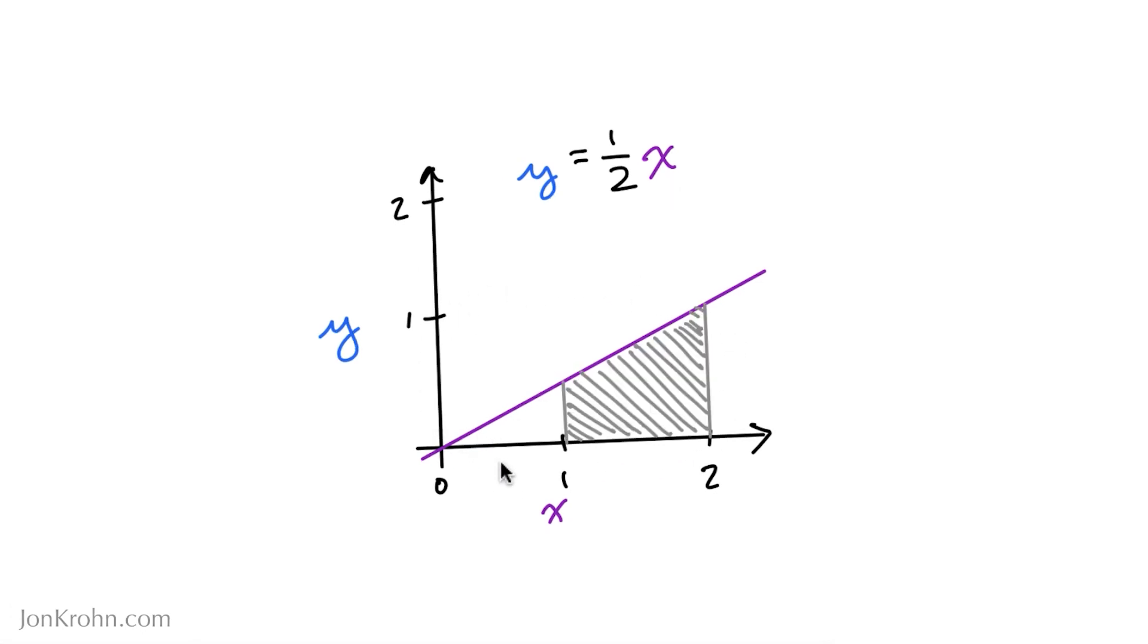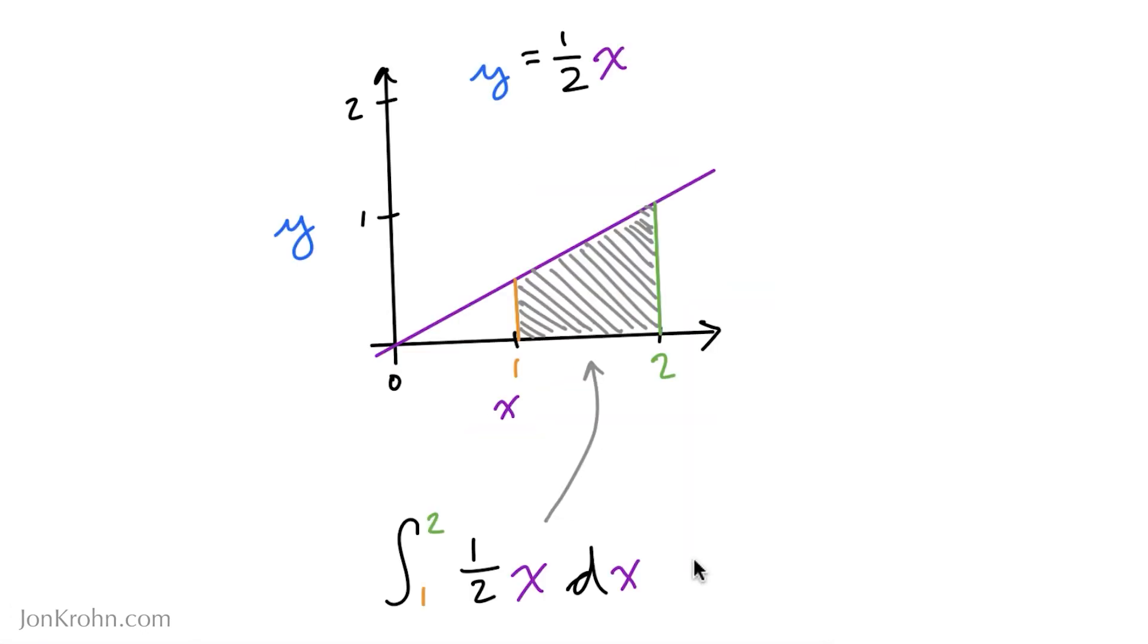And then let's say that you're interested in the area here from the range of x is equal to 1 to the range of x being equal to 2. So we want the area that's shaded in gray here underneath this curve. So to do this, we can use a definite integral.